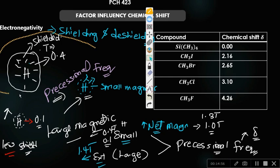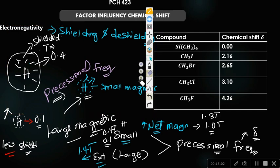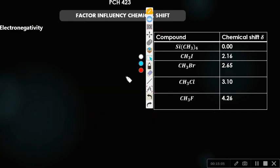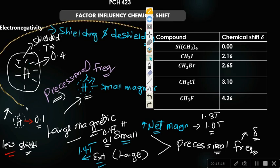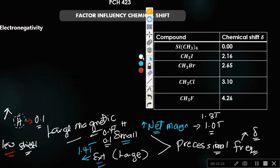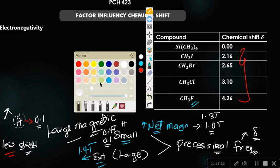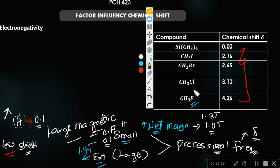Electronegativity is the tendency of an atom to withdraw electrons to itself. These are different chemical shift values based on increased electronegativity. Fluorine is the most electronegative element. In this group, fluorine is more electronegative, followed by chlorine, followed by bromine, followed by iodine. Tetramethylsilane (TMS) is given a chemical shift value of 0.0.